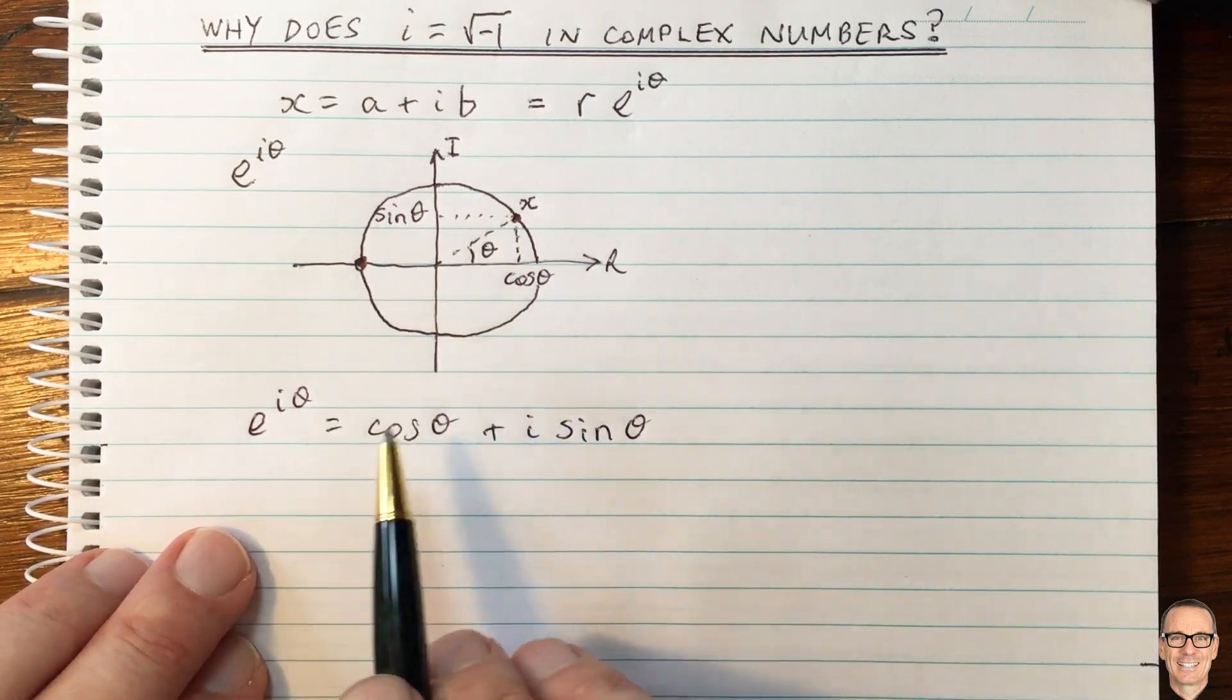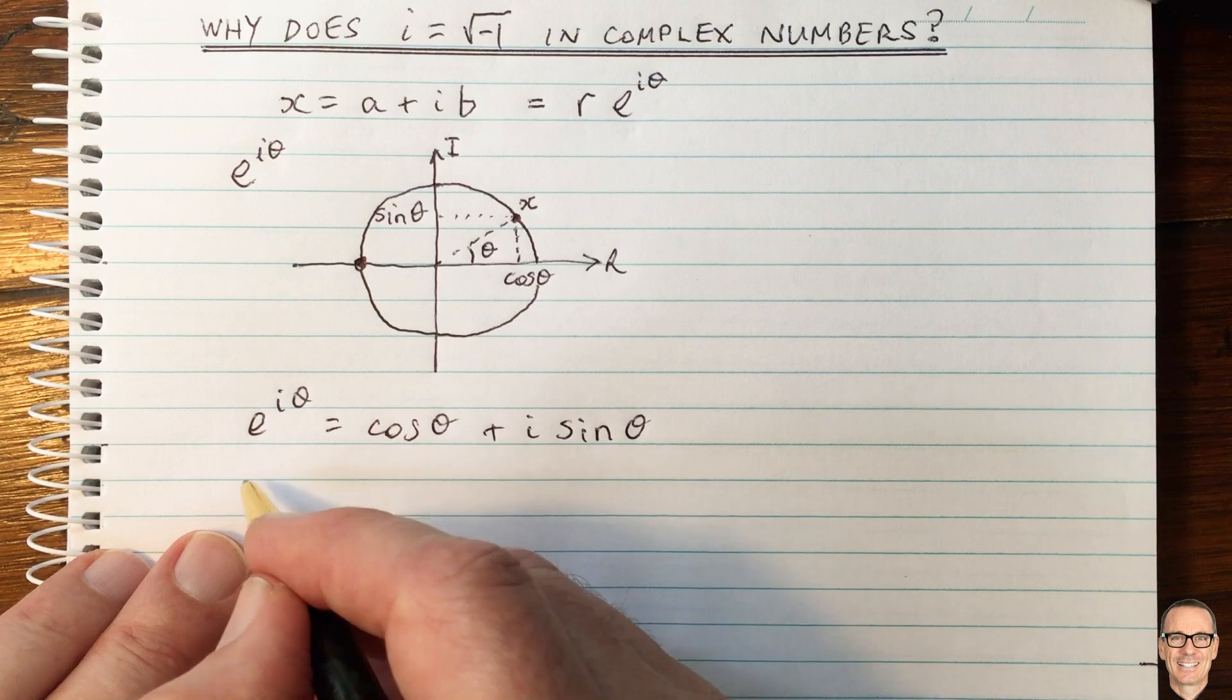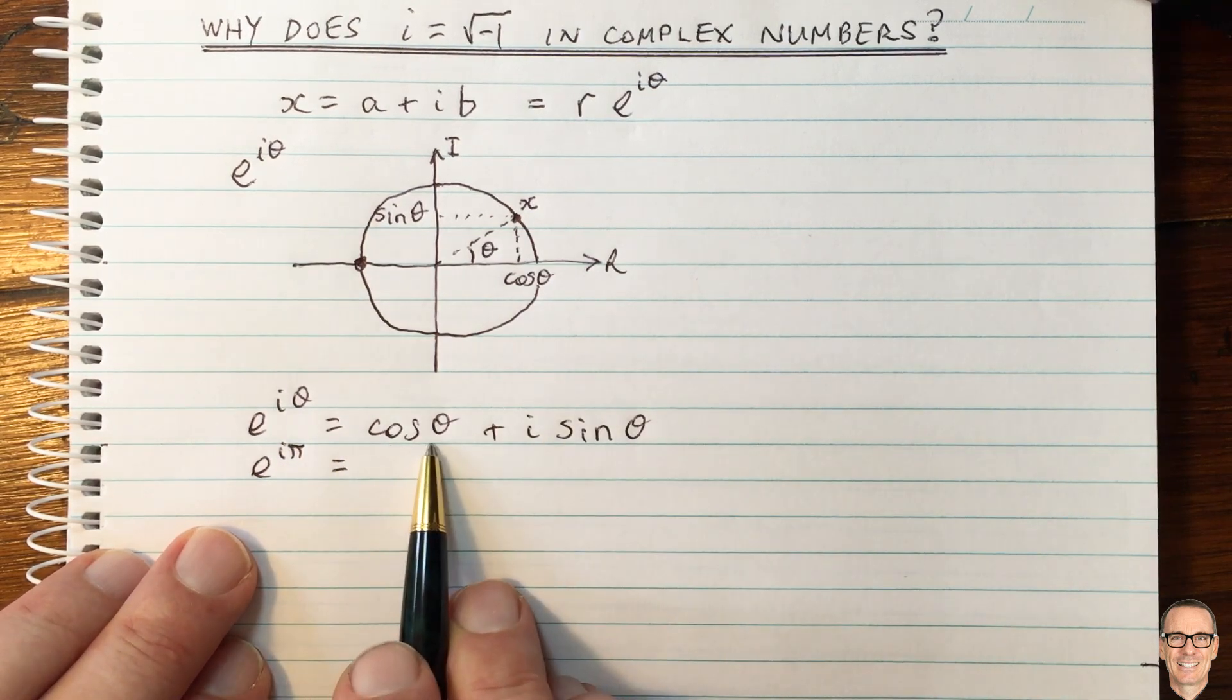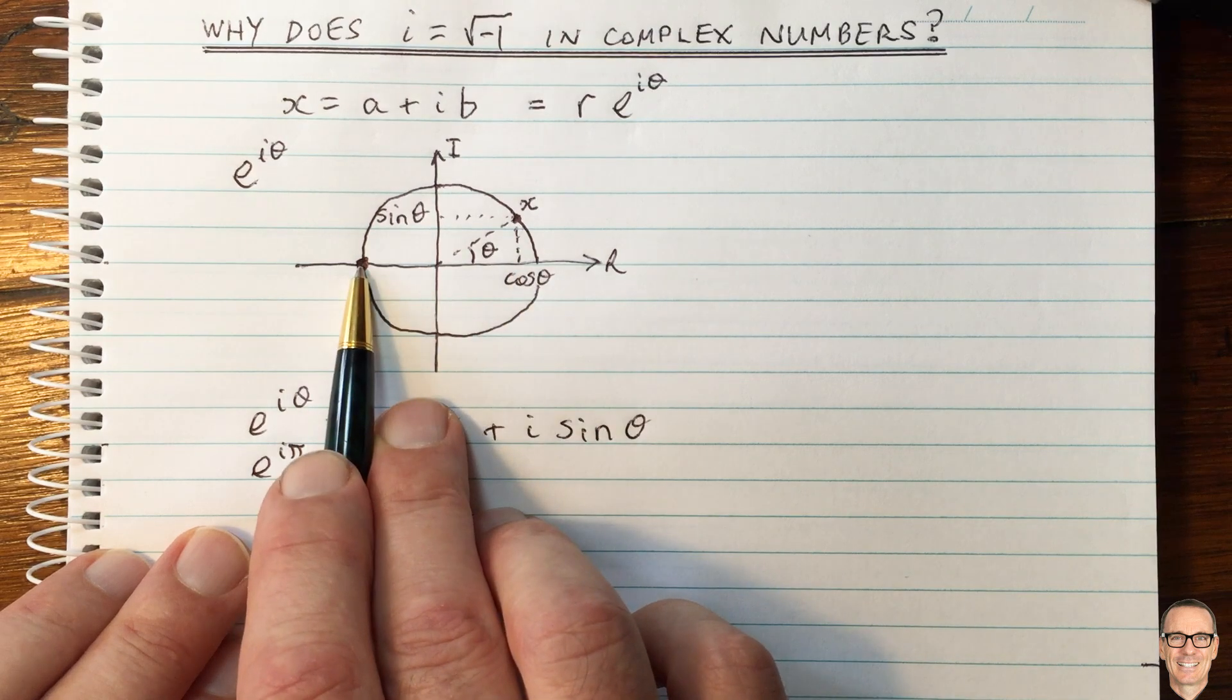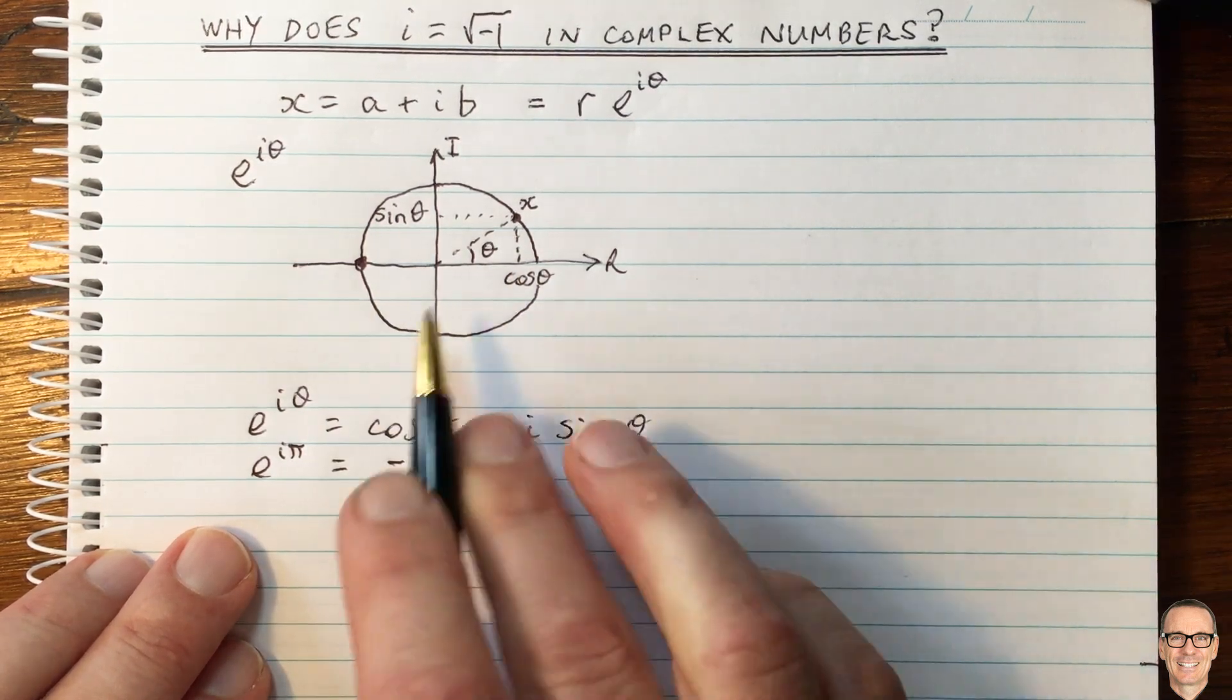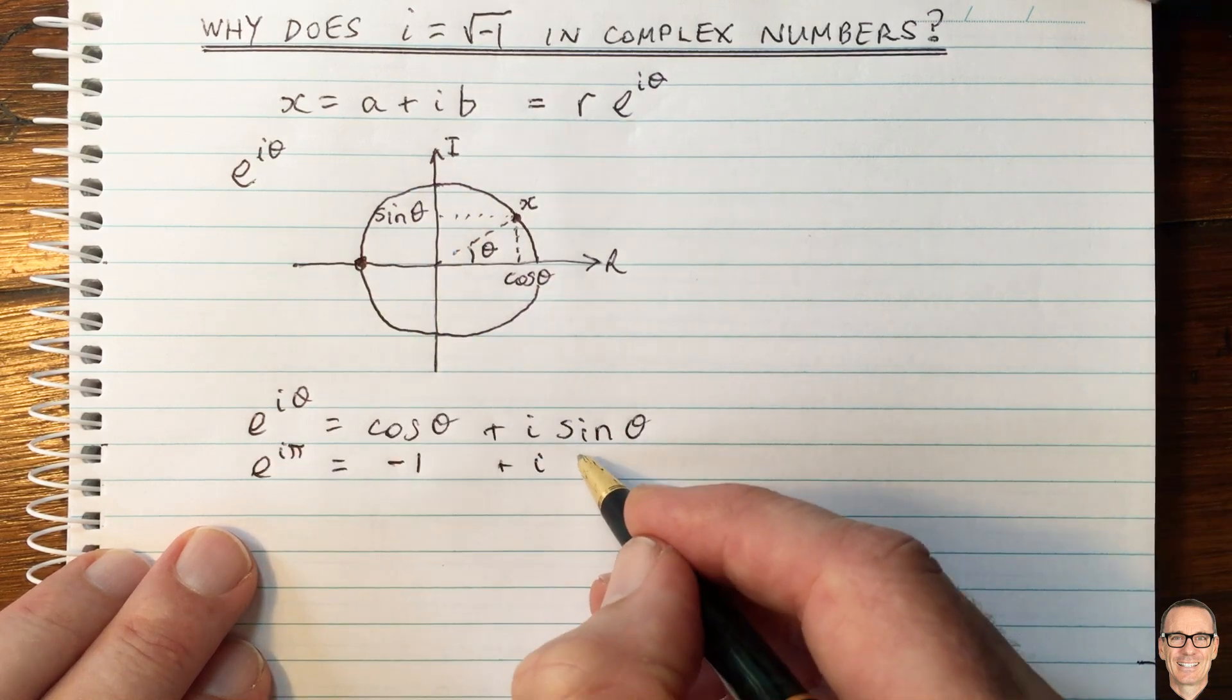Okay, so when theta equals pi, let me write this down here, e to the i pi. Then we have the real part, the cos theta, equals minus 1. And the imaginary part, the sine theta, which is the vertical, equals 0.